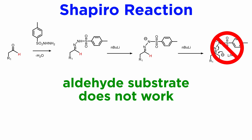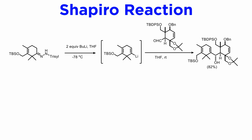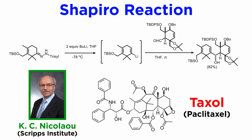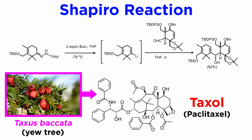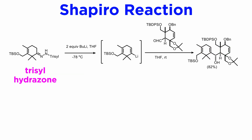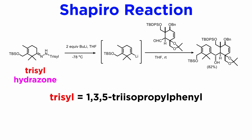We must note that tosyl hydrazones from aldehydes do not work because the butyllithium adds to the C=N double bond and does not form the dianion. This is a very versatile reaction and has been used often in complex syntheses. For example, in the total synthesis of taxol described by Professor Nicolaou while at Scripps Research Institute in La Jolla — taxol is an important anti-cancer drug originally isolated from the bark of the tree Taxus baccata, commonly called the yew tree. As you can see, the key reaction joining ring A and C is a Shapiro reaction. The hydrazone used nowadays is usually the trisyl, meaning 2,4,6-triisopropylphenyl hydrazone, which gives slightly better yields than the tosyl hydrazone and is generally preferred.